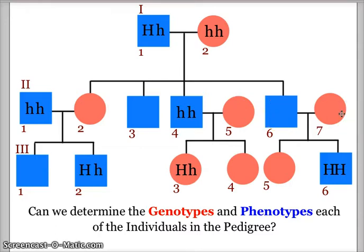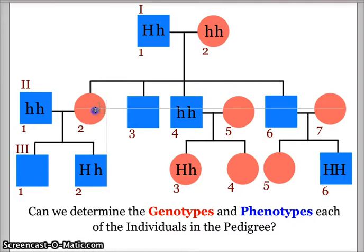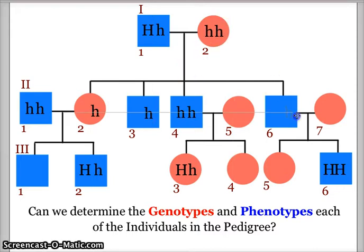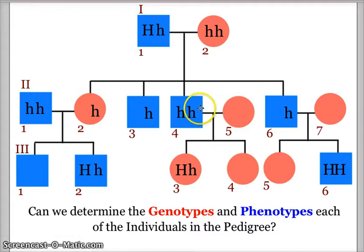We don't know anything about individuals two, three, five, six, or seven, and our job is to figure out their genotypes and from those, their phenotypes. What we absolutely know is that the mother can only pass on little h's, so we'll place the mother's allele in each of these individuals. We cannot fill in individual number five in generation two because she married into the family and we don't know anything about her parents.